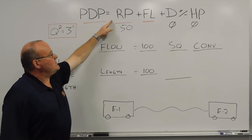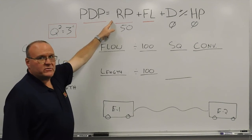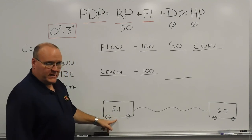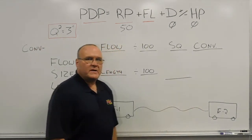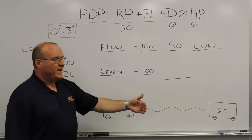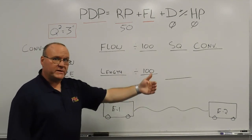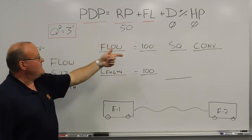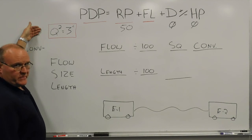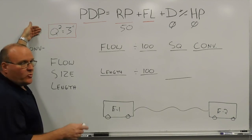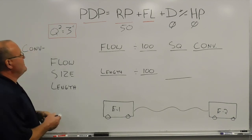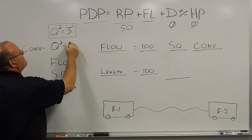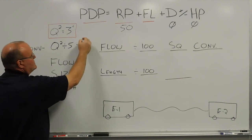So instead of a nozzle pressure, we're going to use a residual pressure of 50 pounds. That's the pressure I'm giving from my engine — engine 1 — to the driver operator of engine 2. He has a residual pressure of 50 pounds at his pump panel on top of what he's flowing. So pump to pump, residual pressure of 50 pounds in a relay or supply setting. Q-squared for 3-inch hose; to go from 3-inch to 4-inch hose, the conversion factor is to divide by 5.